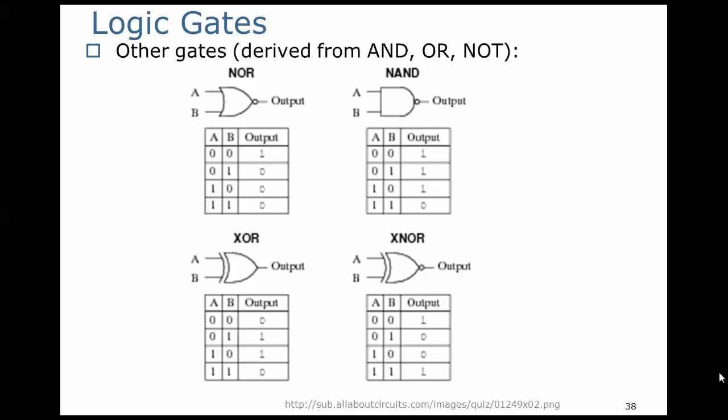Now, besides the canonic gates of AND, OR, and NOT, there are several derived gates that are used enough that they get their own symbol and their own name. What you notice here, first at the top left, is what's called a NOR gate.